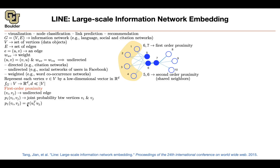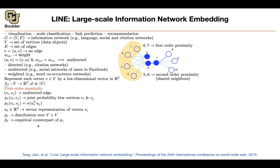You push that product through a sigmoid, giving you a probability. u_i is the vector representation of your vertex. p_1 introduces a distribution over V × V. We know the global statistics of the graph, which gives us an empirical counterpart p̂_1, and then you minimize the KL divergence between p̂_1 and p_1 to optimize the parameters.